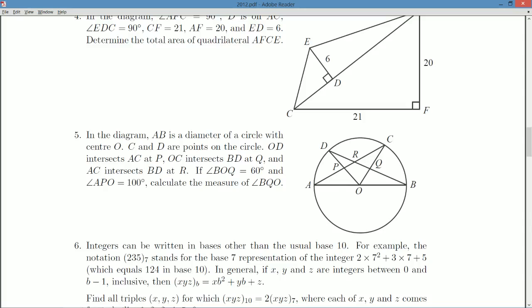C and D are points on the circle. I'm thinking things like any of the circle angle theorems, in particular, the way this is set up, I'm thinking ABD is a right angle at D. OD intersects AC at P. OC intersects BD at Q. AC intersects BD at R, just as the diagram shows us.